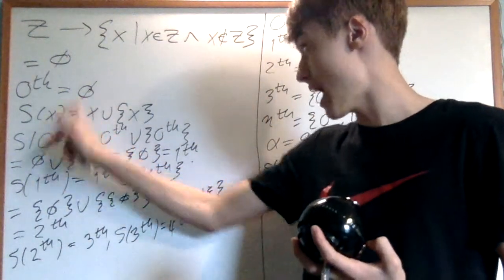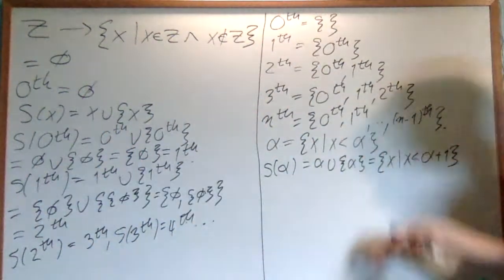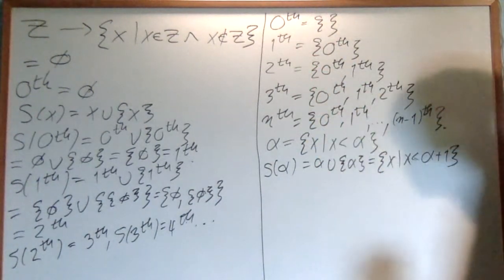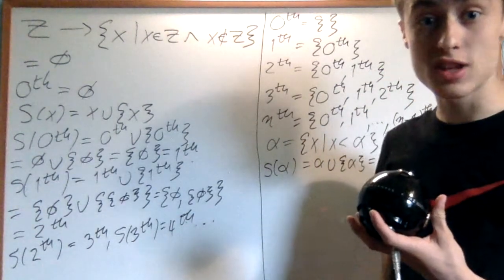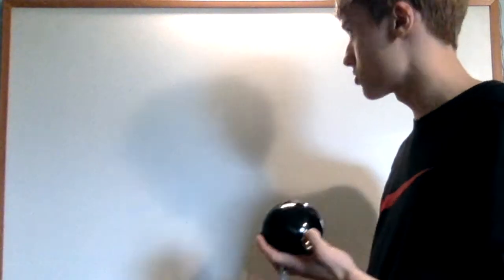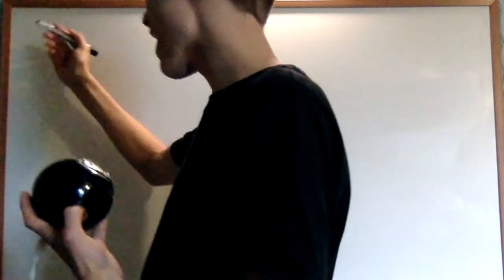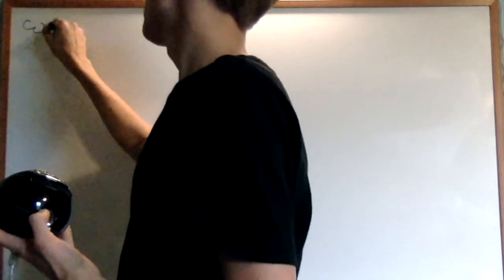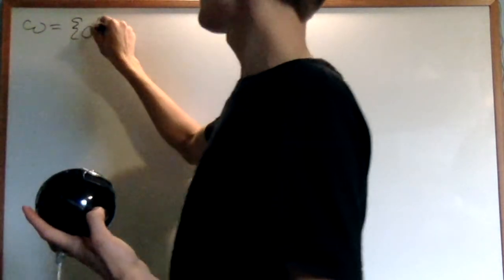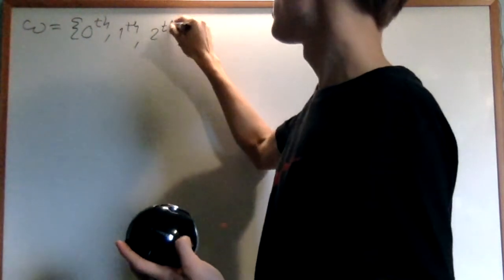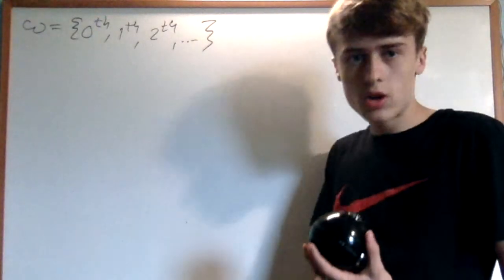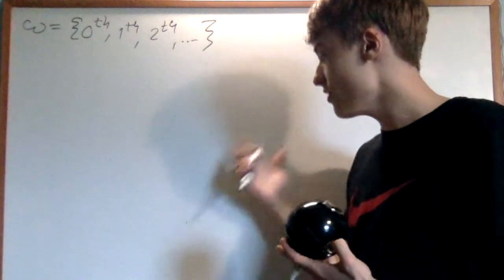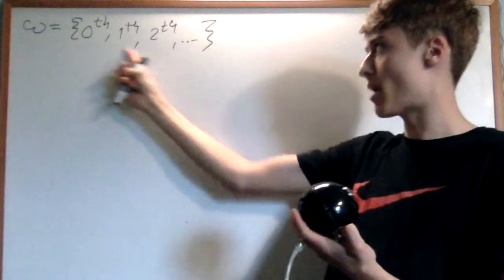This is why the successor operation works, and this is why the empty set is so important — it makes all of this work. We've constructed a formulation of the natural numbers. But this is where it gets interesting: it continues past the natural numbers. What's an example? Well, you might want to call it the natural numbers — I'm calling it omega. Omega is the set {0th, 1th, 2th, ...} going on infinitely. So this is an infinite set. How do I know it exists? Well, the axiom of infinity — this is precisely the set guaranteed by the axiom of infinity.